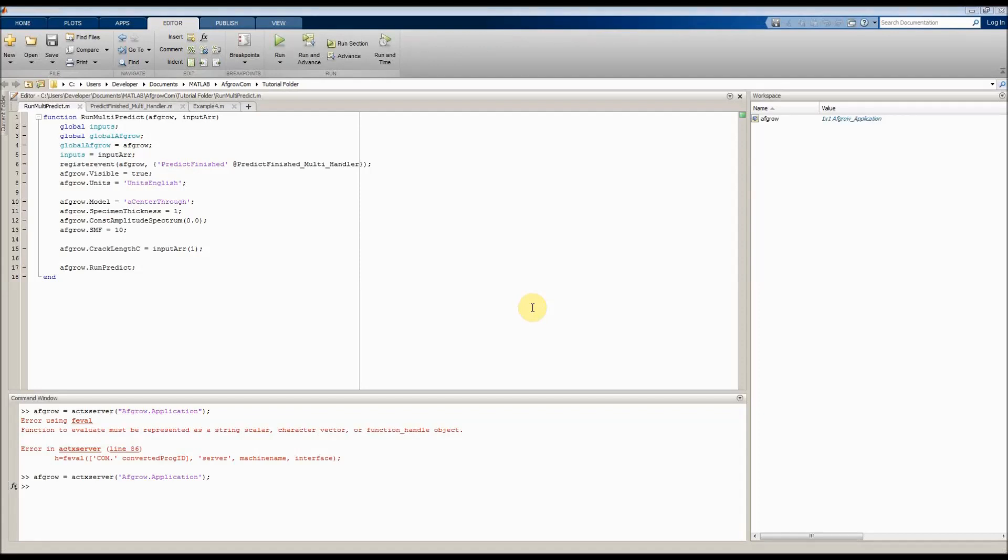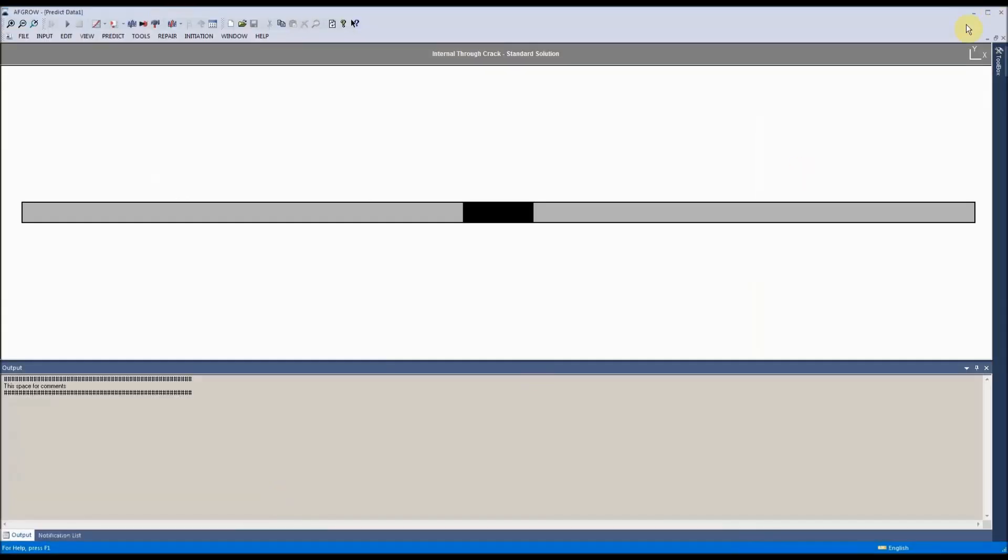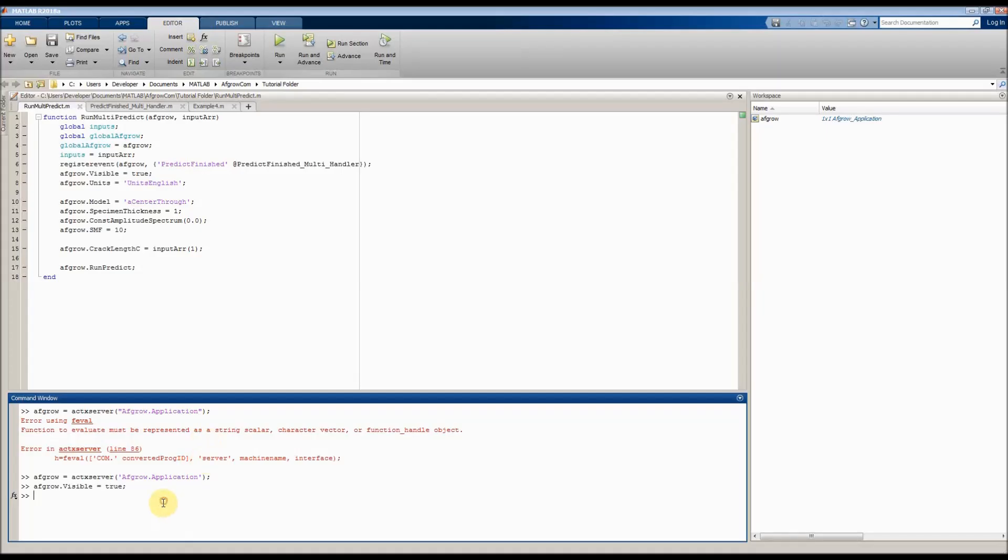Okay, so now we have a functioning AFGRO COM server. We can go ahead and say AFGRO.Visible equals true, and that should make it so that we can view AFGRO. Now all we need to do is call our function. So type runMultipredict, and then give it the handle to AFGRO, and then it requires an input array.